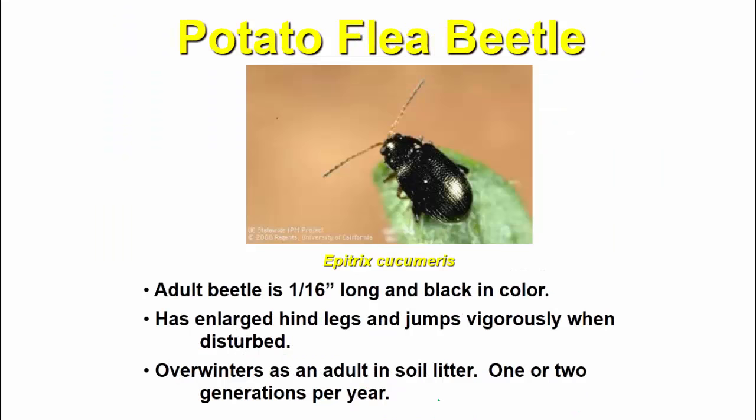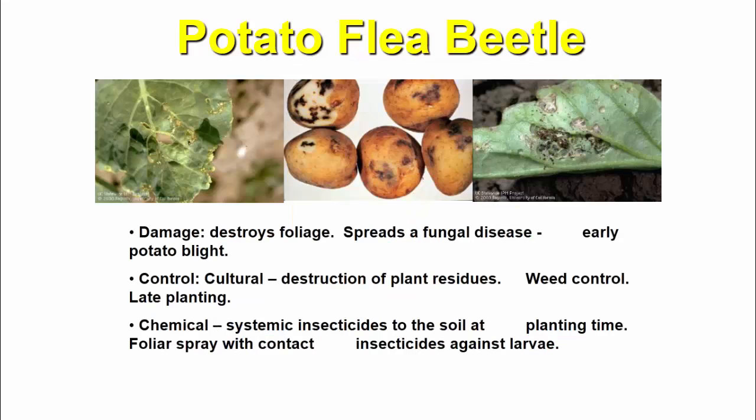Flea beetles are about 1/16 inch long and black in color. They have enlarged hind legs and jump vigorously when disturbed. They overwinter as adults in the soil litter, with 1 or 2 generations per year. Damage includes destroying foliage and spreading fungal diseases such as early potato blight. Cultural control includes destruction of plant disease residues, weed control, and late planting. Chemical control uses systemic insecticides in the soil at planting time and foliar contact insecticide sprays against larvae.